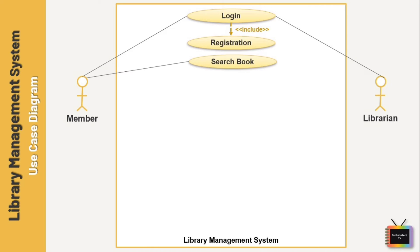Next I added the search book function and linked it with the member. A member gets to search the books as per their preferences based on various categories available in the library. Now our member can request a book of their choice, so I am adding the borrow book use case.